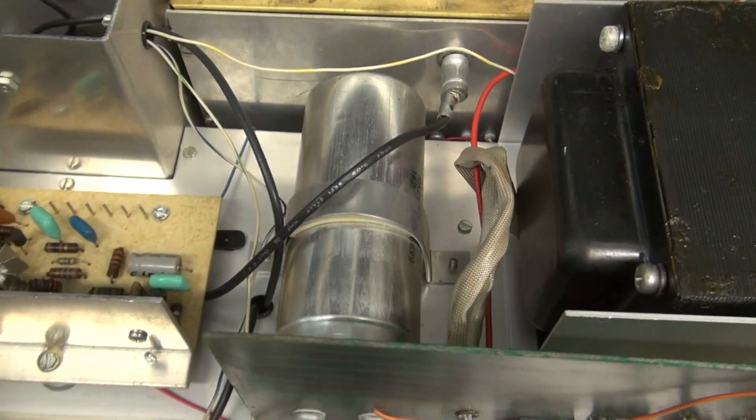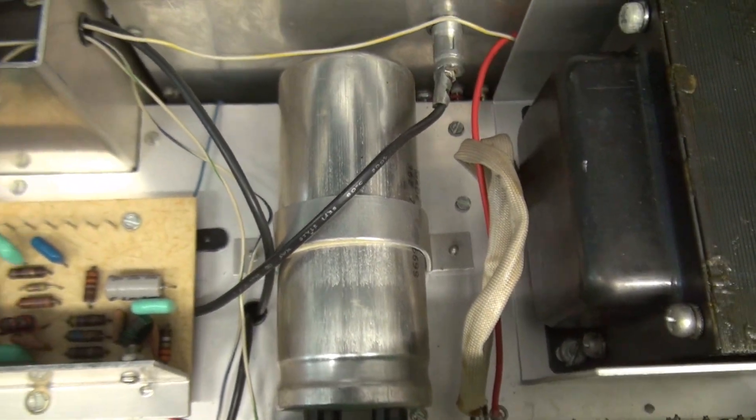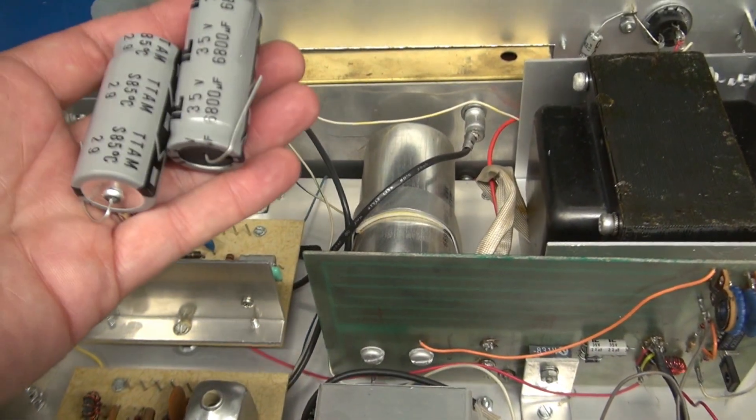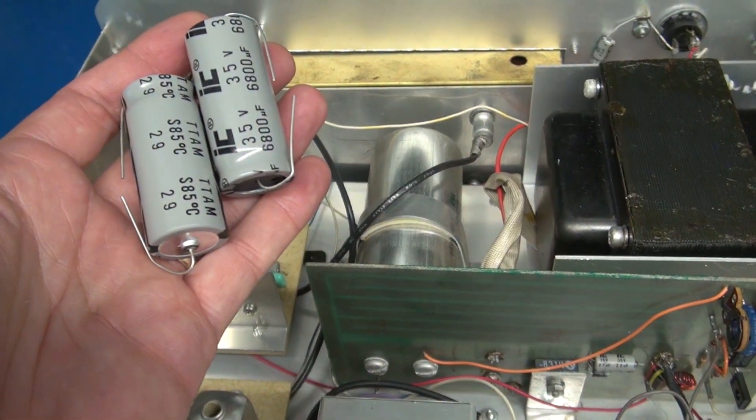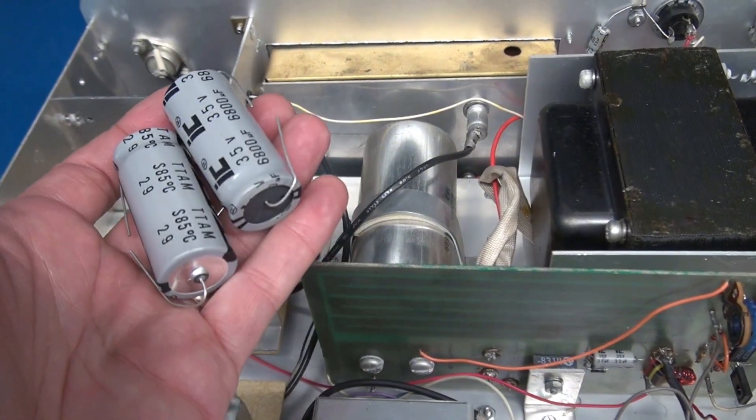And there is the main filter cap. Quite the cylinder. Takes up a lot of room. I'm going to be changing that out with a pair of axial lead caps to come up with approximately 13,000 microfarads.